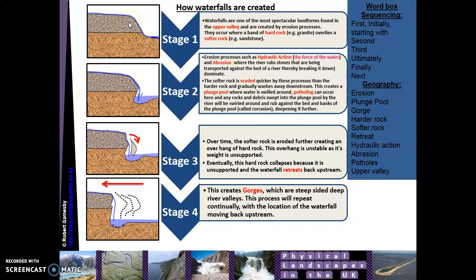Stage one: you need two bands of rock for a waterfall to form. You have the cap rock at the top, which is harder rock, and softer rock underneath — shown here in the browny sandy colour. When a river starts to flow over the land, it erodes the softer rock first, forming a step in the landscape. You might have seen this along the River Mersey where little rapids form — that's because you've got a band of hard rock on top and softer rock beneath.